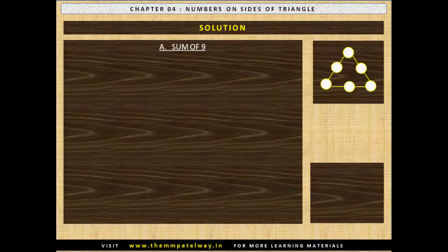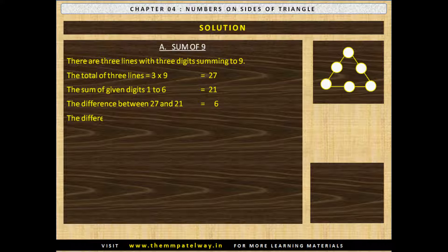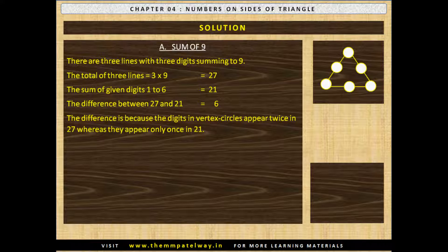Let us study the solution for the sum of 9. There are three lines with three digits each summing to 9. The total of 3 lines equals 3 into 9, that is 27. The sum of given digits 1 to 6 is equal to 21. The difference between 27 and 21 is 6. This difference of 6 is because the digits in vertex circles appear twice in 27 whereas they appear only once in 21. That is, the sum of digits contained by vertex circles is 6, that is 1+2+3.